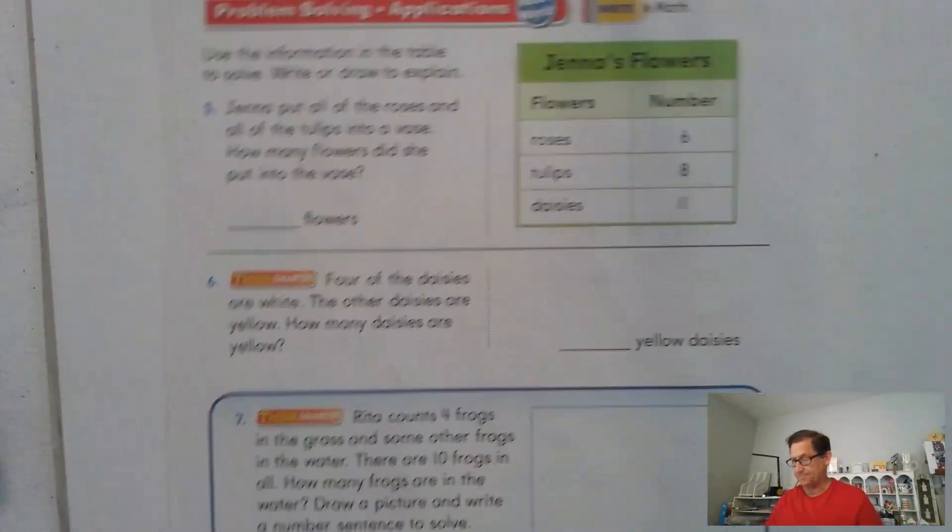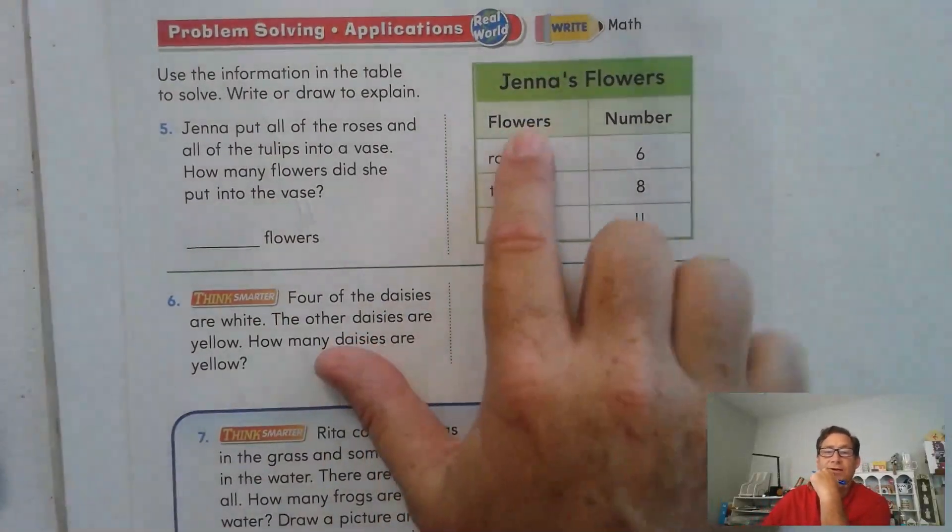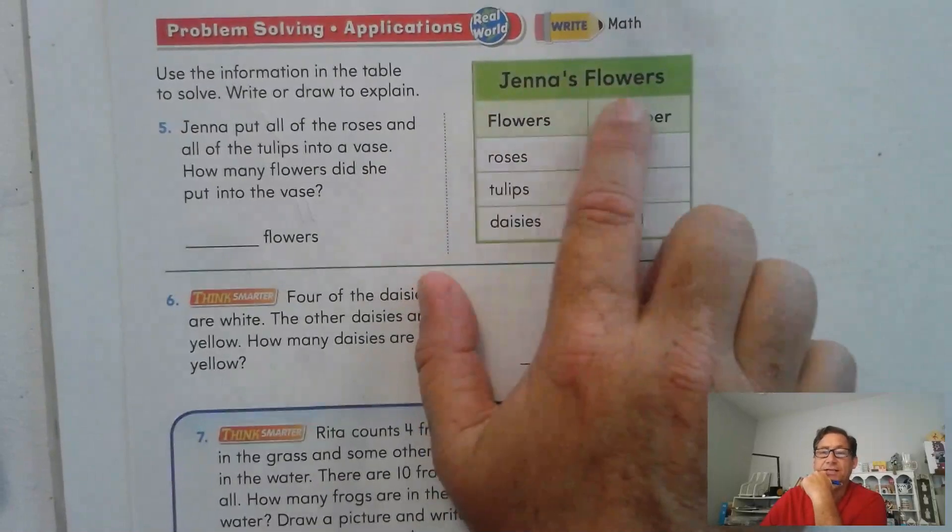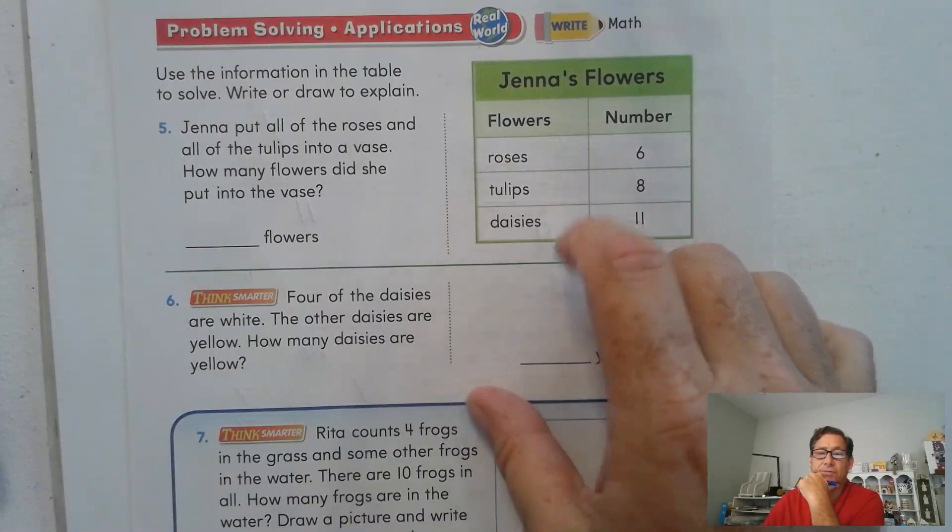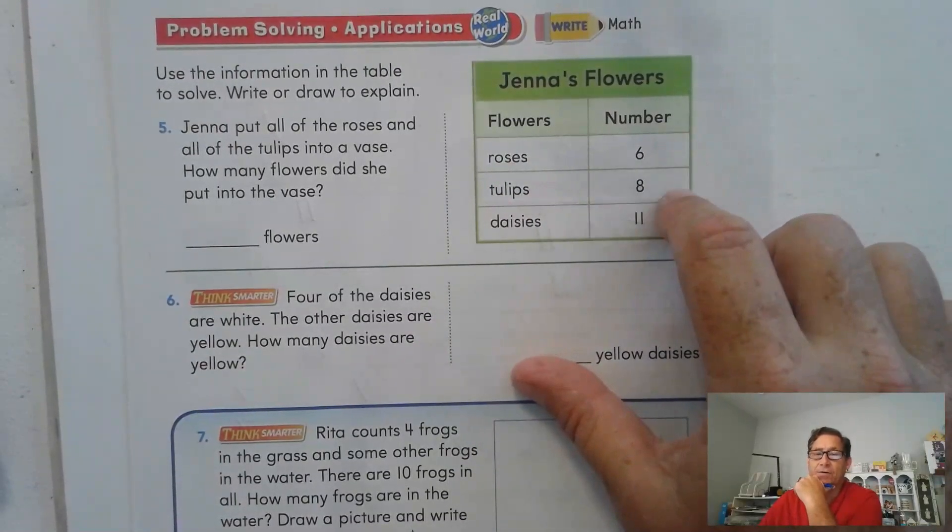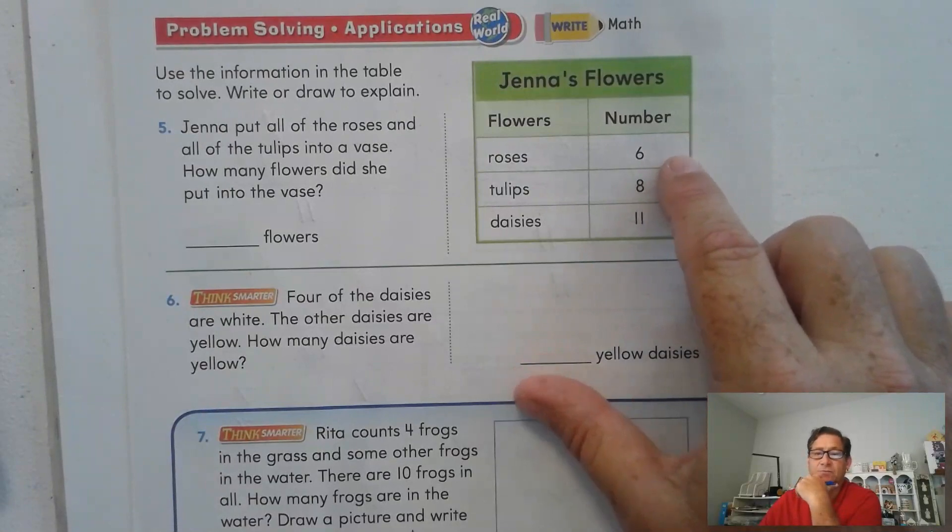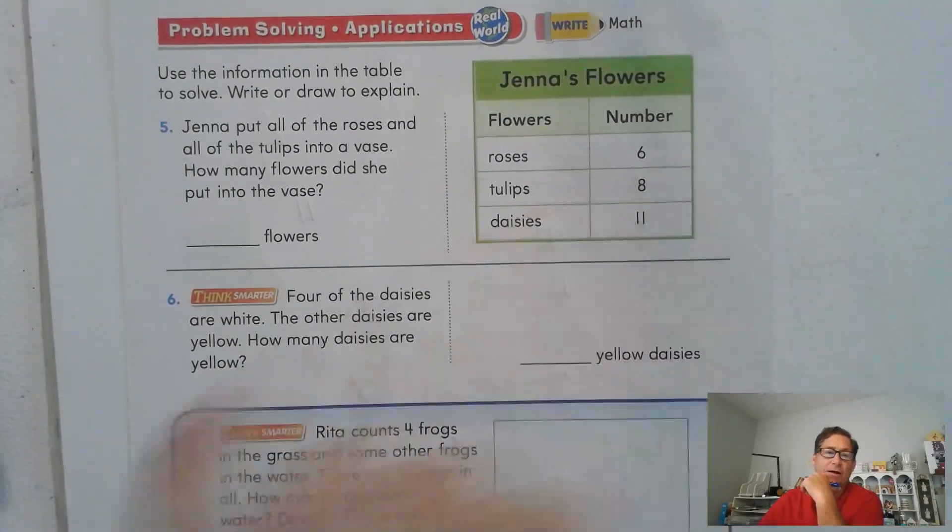Page 152. Use the information in the table. So when we get a table, we want to look at the title, Jenna's Flowers. We have apparently three different types of flowers, roses, tulips, and daisies. And we have a certain amount of each flower. So there are 6 roses, 8 tulips, and 11 daisies.